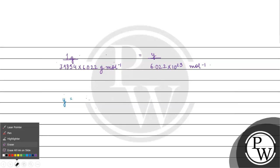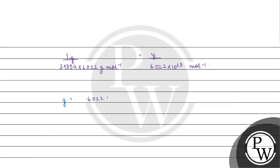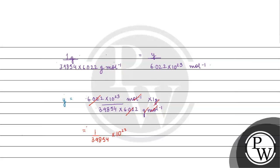We apply: 6.022 into 10 to the power 23 mole inverse, into 1 gram, divided by 3.9854 into 10 raised to the power minus 23 gram per mole. We cancel 6.022, and we get 1 upon 3.9854 into 10 raised to the power 23, which gives us 2.509 into 10 raised to the power 22 atoms.